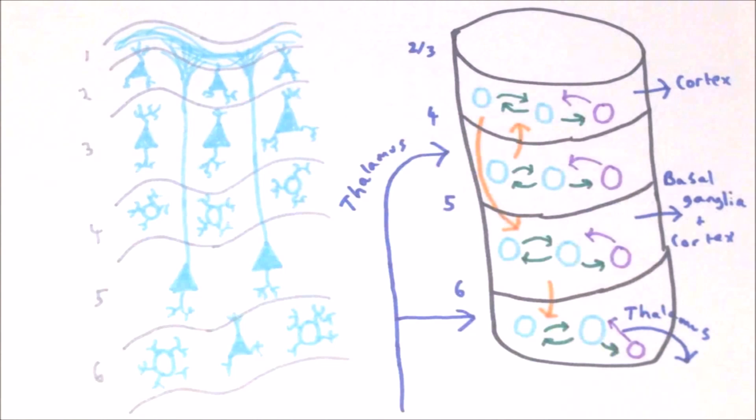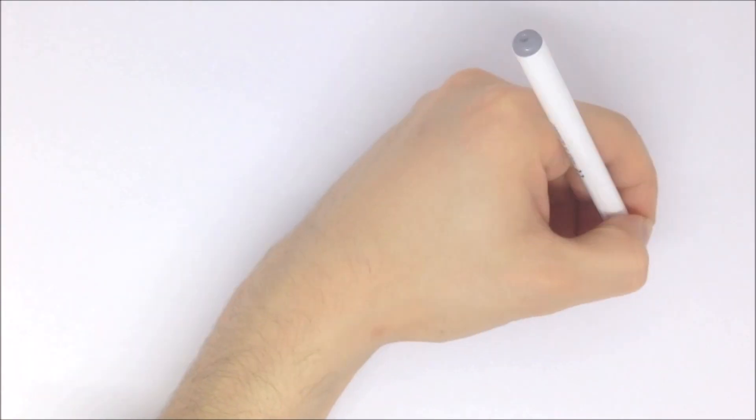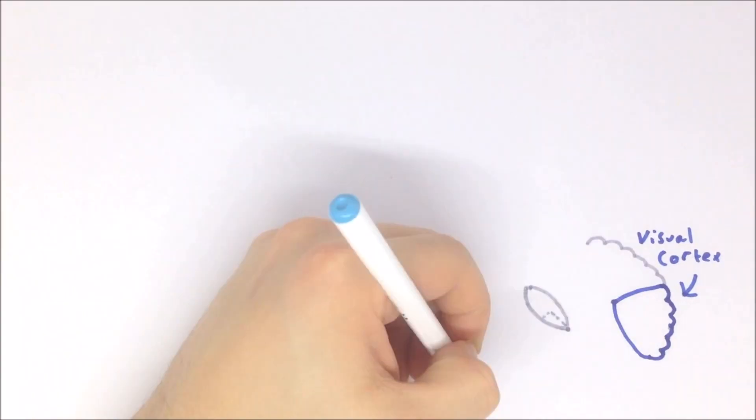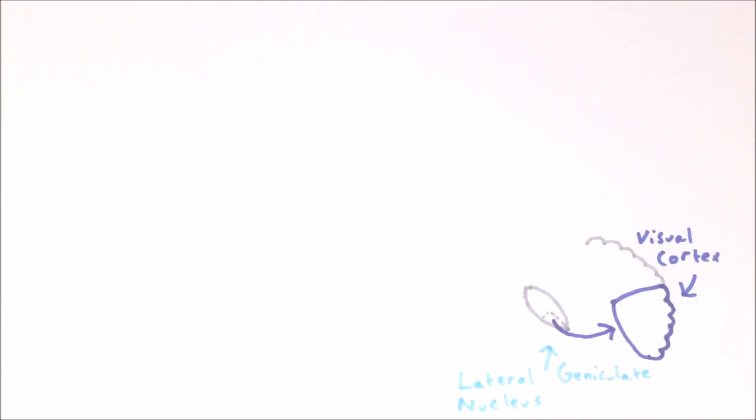We can now look in detail at how each layer of the cortex processes information. To help illustrate this, we will use the primary visual cortex as an example. The primary visual cortex is a region of the occipital lobe — it is the first part of the cortex to process visual information, and it receives input from the lateral geniculate nucleus of the thalamus.